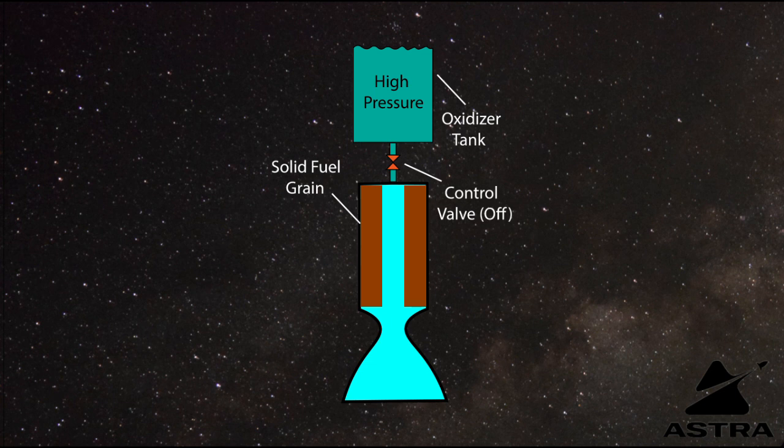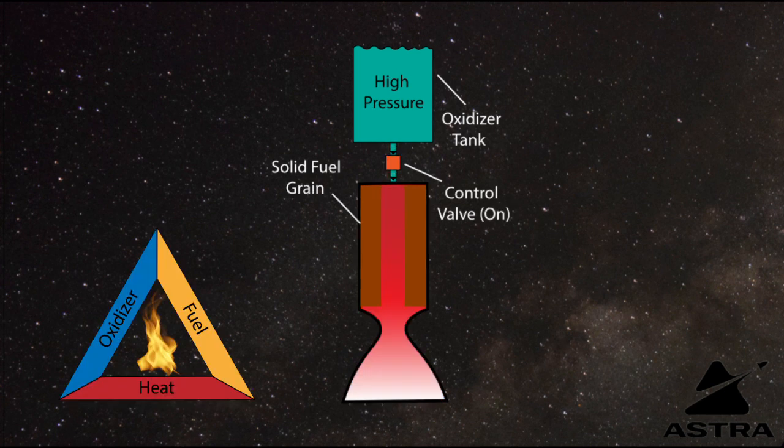And then similar to a liquid rocket engine, the oxidizer is in a liquid form and exists in a tank where it is then fed into the combustion chamber. Once the liquid oxidizer is fed into the combustion chamber, it is able to react with the solid fuel grain in order to create the combustion reaction.